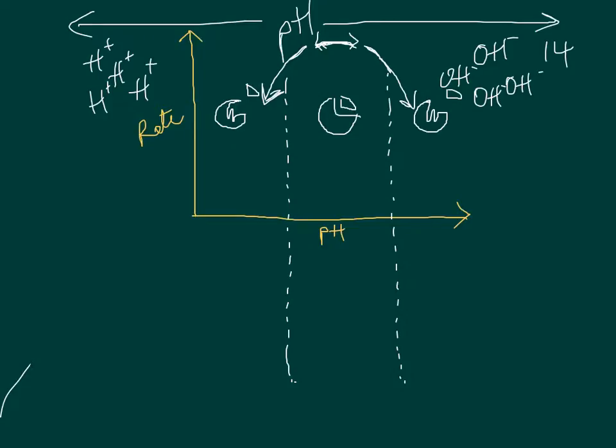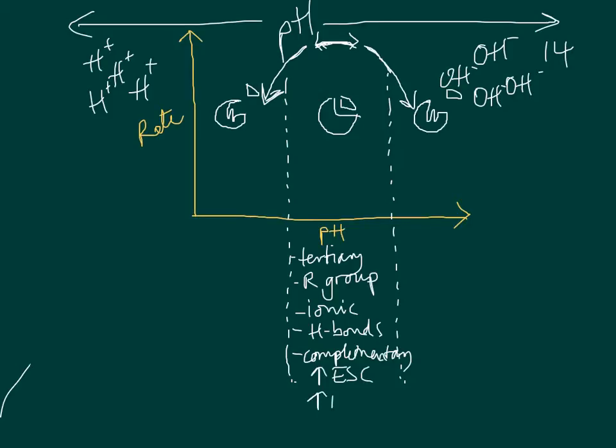So the main points here would be that at the optimum pH, the tertiary structure, which, remember, is dependent on R-group interactions, such as ionic bonds, hydrogen bonds, they ensure the right shape that the active site is complementary to the substrate. We have increase in the formation of the enzyme substrate complex, and therefore an increase in the rate of product formation.